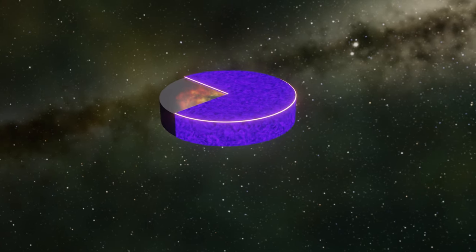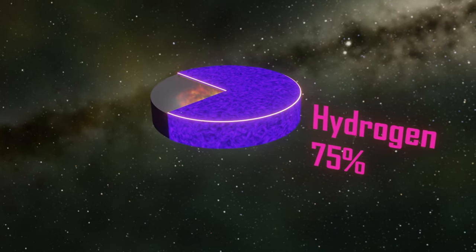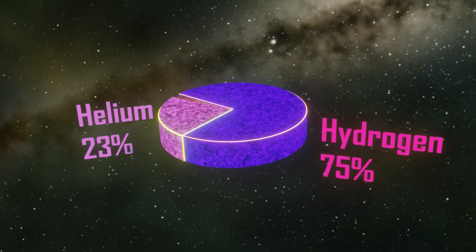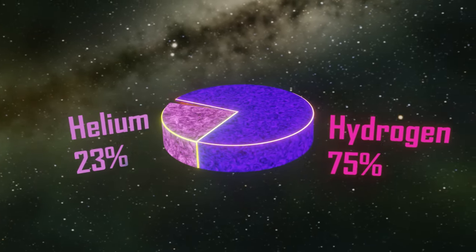And thanks to these observations, we discovered that hydrogen is actually the most abundant element in the universe, making up over 75% of all known matter.